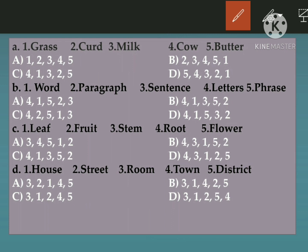Part B words are: Word, Paragraph, Sentence, Letters, Phrase. With the use of letters you can form words. With the use of words you can form sentences. With the use of sentences you can make phrases, and after phrases you can make a paragraph. So the sequence will be 4, 1, 3, 5, 2.